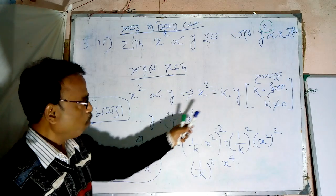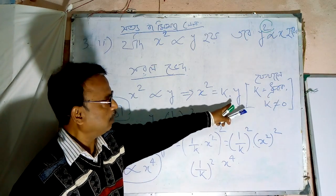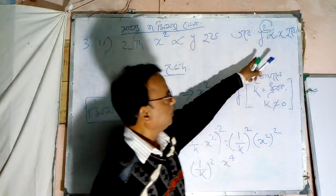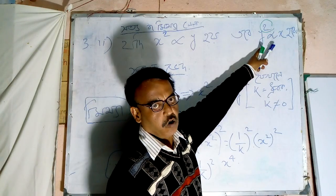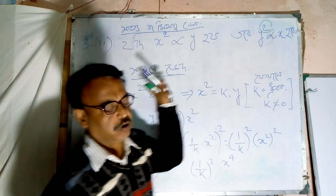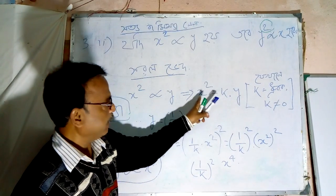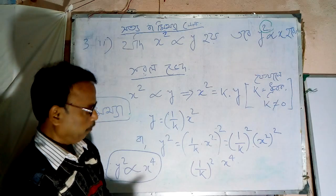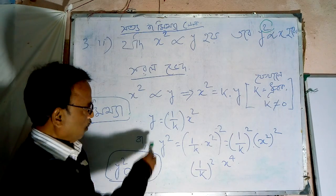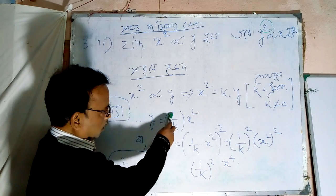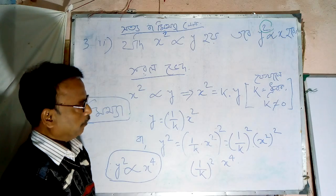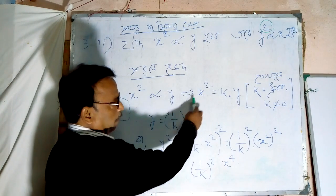What is Y? Y is equal to 0. Y is equal to 0, 1 by K. He is equal to 0.